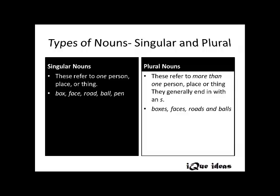Singular nouns refer to one person, one place, or one thing. Examples are box, face, road, ball, and pen. Plural nouns refer to more than one person, place, or thing. They generally end with an 's'. Examples are boxes, faces, roads, and balls.